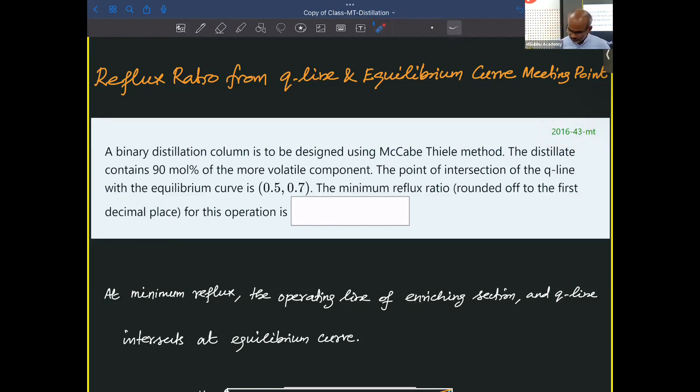A binary distillation column is to be designed using McCabe-Thiele method. The distillate contains 90 mole percent of the more volatile component. The point of intersection of Q line with the equilibrium curve is (0.5, 0.7). The Q line and the equilibrium curve are intersecting. The minimum reflux ratio is to be found.